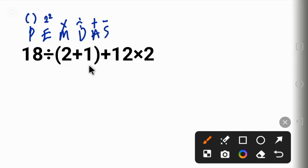We begin with the one in parentheses. 2 plus 1 equals 3. So we have a new equation which is 18 divided by 3 plus 12 times 2.